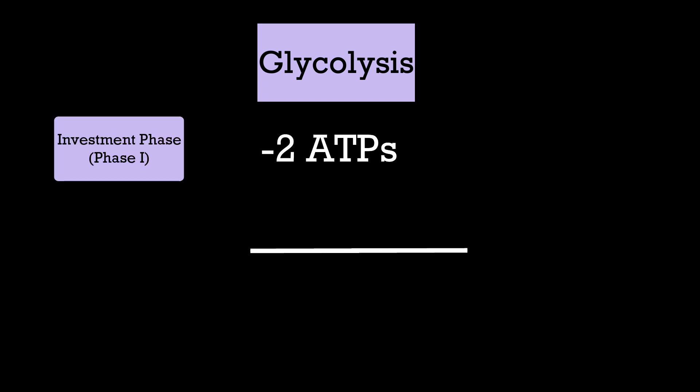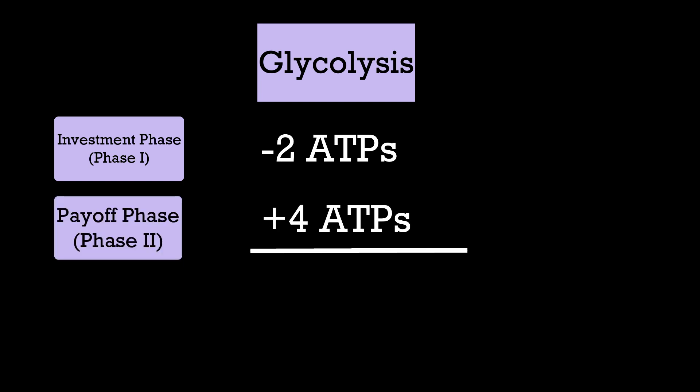Glycolysis has two parts: the investment phase, where two ATPs are used, and the payoff phase, where four ATPs are produced. In the end, glycolysis produces a net of two ATPs and pyruvate that can be used in further reactions to produce even more ATP.